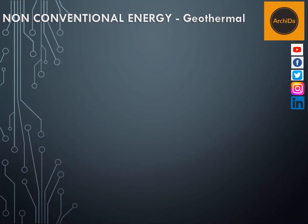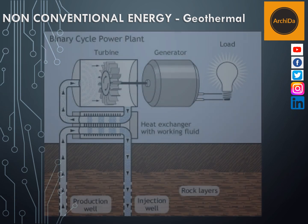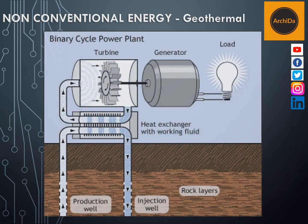The last variation of a geothermal plant is called the binary cycle power plant. This taps the hot water and in turn will still boil that hot water to provide the steam for the turbine.